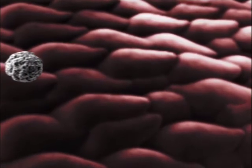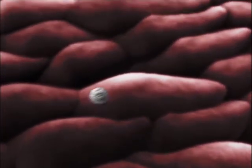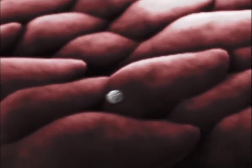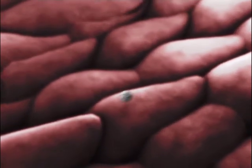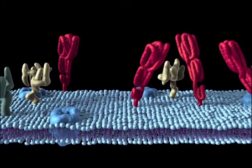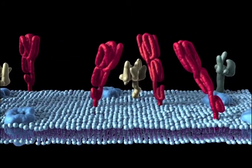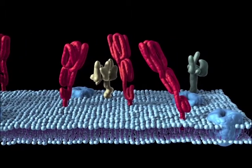Viruses initiate infection of cells by first attaching to receptors on the host cell membrane. Different types of cell surface molecules can serve as cellular receptors for picornaviruses or other viruses. For polio, a single type of receptor is sufficient for entry of the virus into cells.